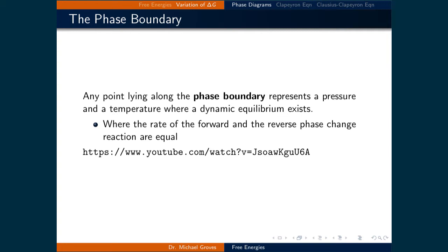Any point lying along the phase boundary represents a pressure and a temperature where a dynamic equilibrium exists between two phases, where the rate of the forward and the reverse phase change reaction are equal. The YouTube video link shows what this process looks like on the molecular scale.